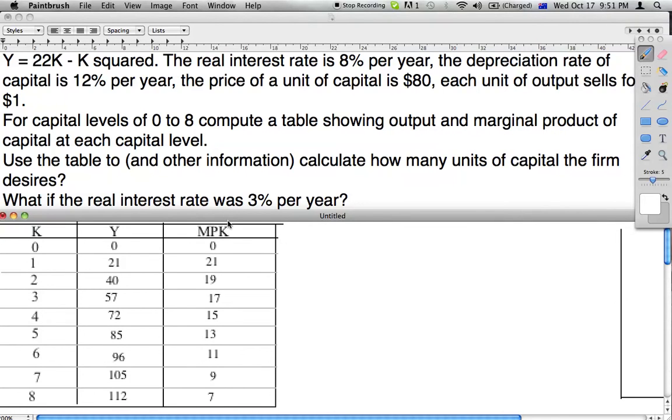Now we've got the marginal productivity of capital. You could think of this as your marginal benefit curve. In other parts of economics, to profit maximize you would produce until your marginal benefit equals your marginal cost.